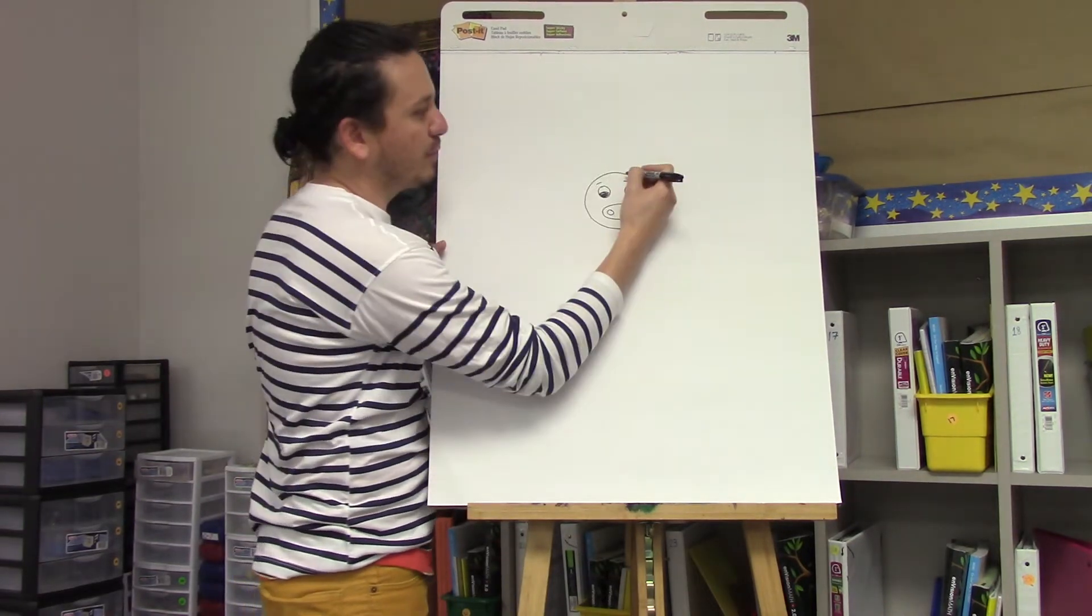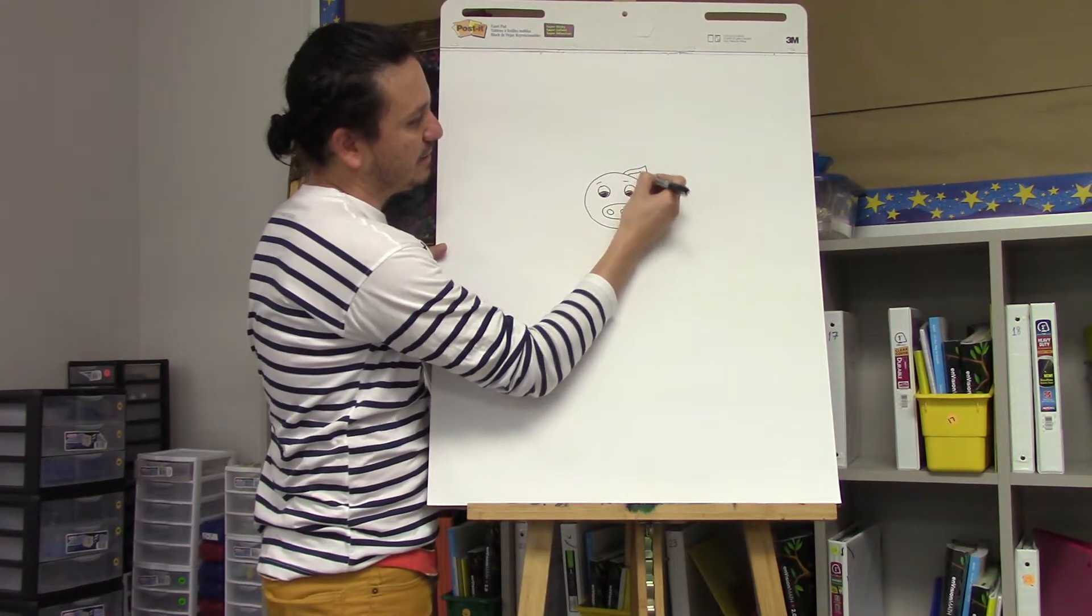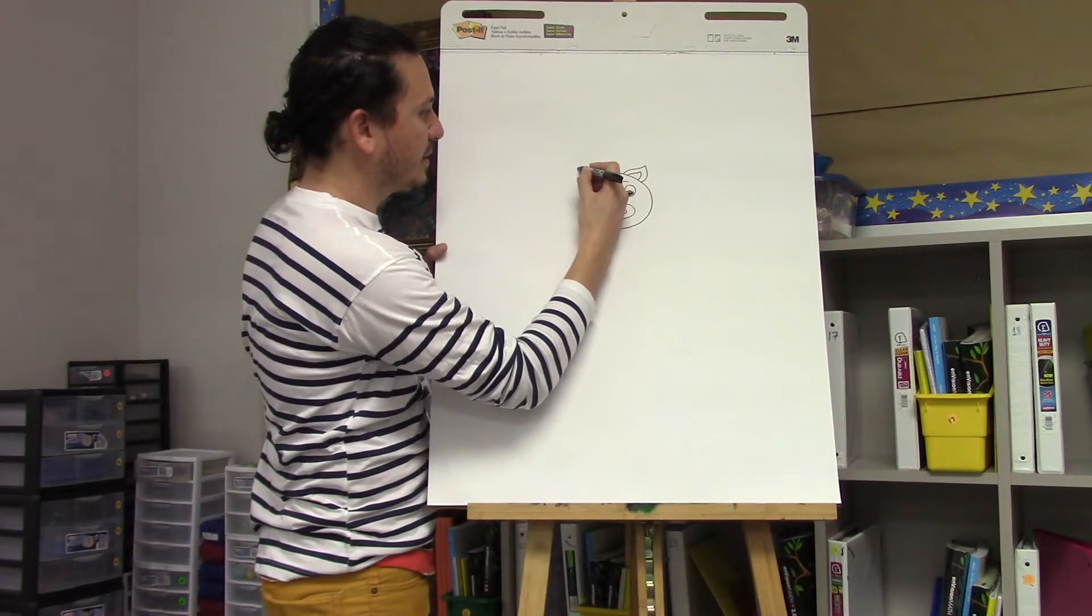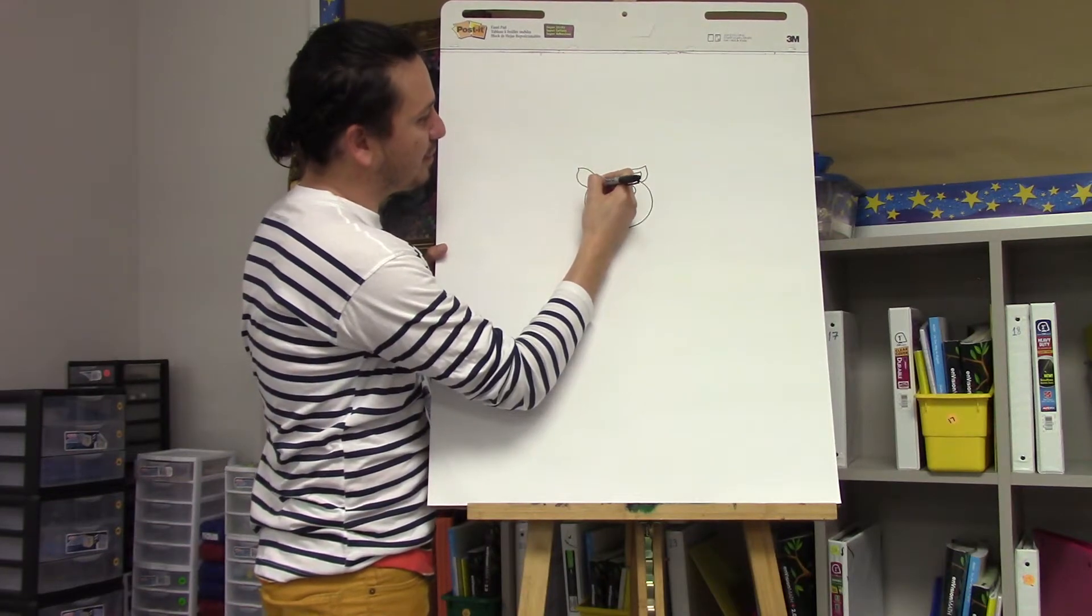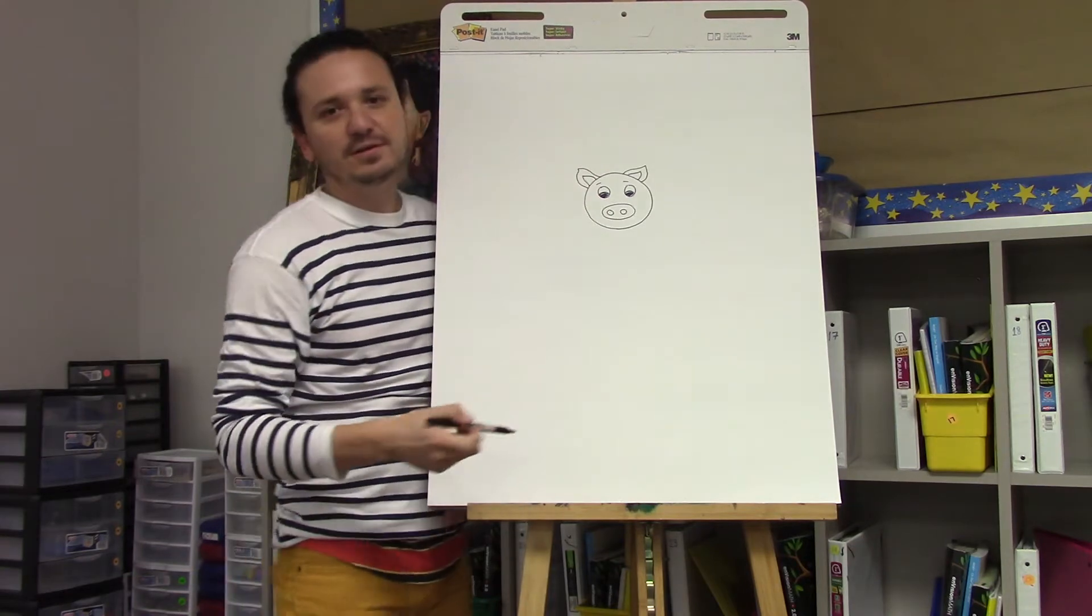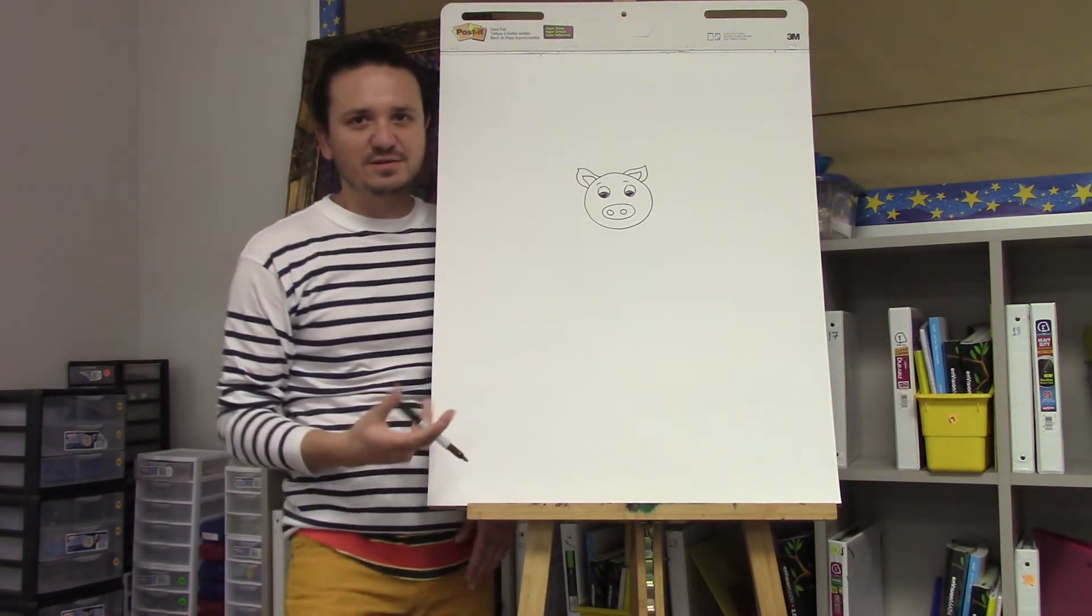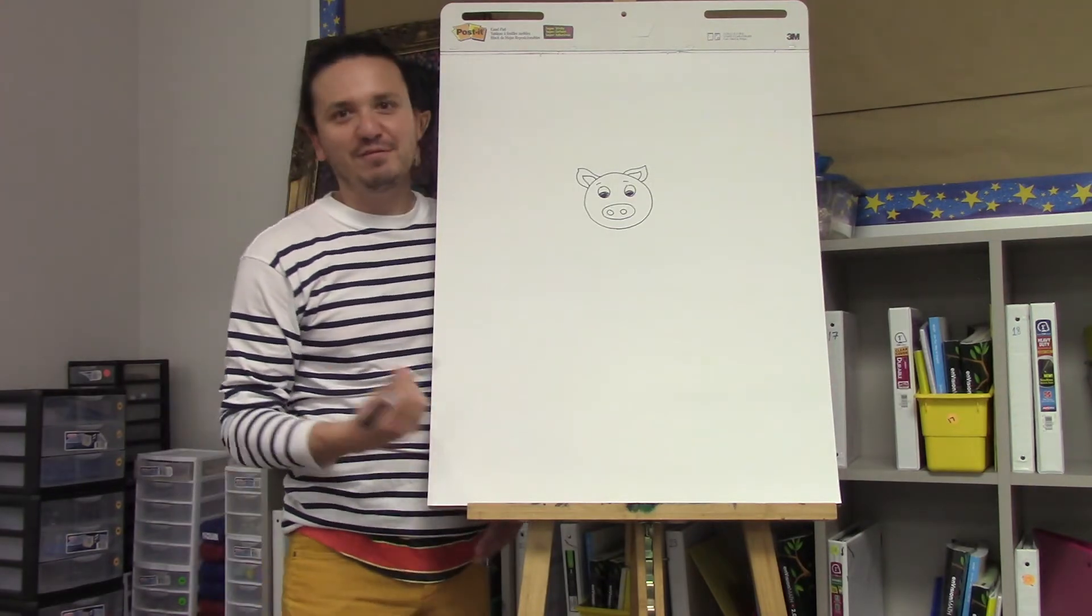To make the ears, make sure they're pointy because pigs have pointy ears. Add the inside of them. It's okay if one's bigger than the other—drawing is all about being creative, and the more you do it, the better you'll get at it. So don't get too discouraged if it doesn't look like mine.